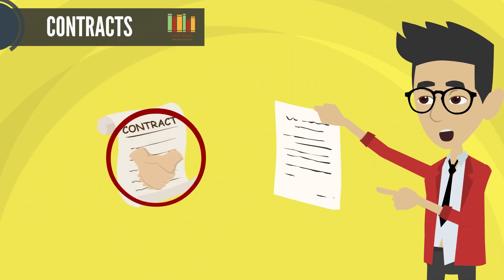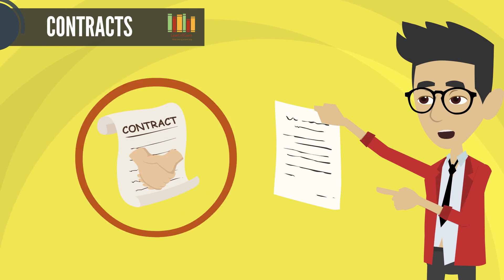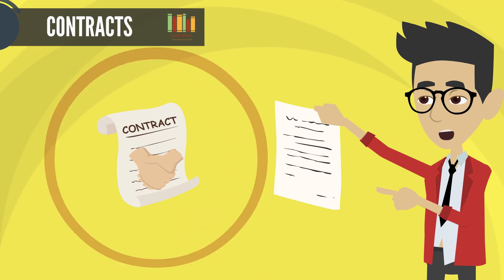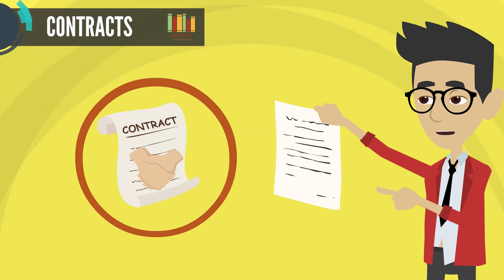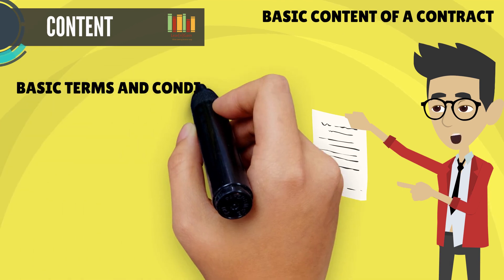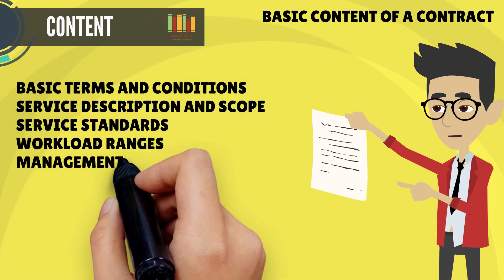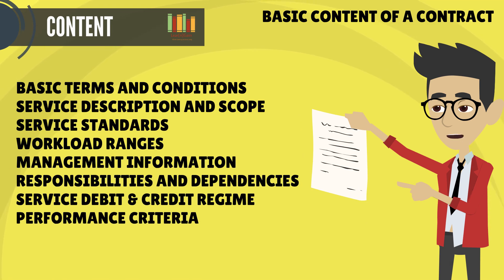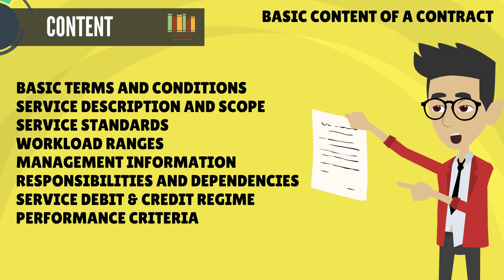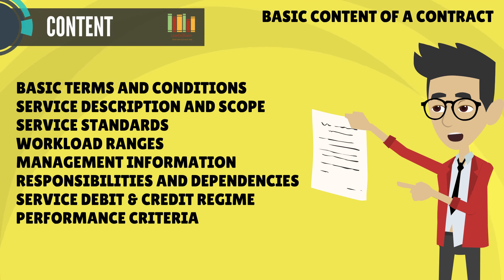Contract is one of the key pieces in managing suppliers. The nature and extent of agreement with a service provider depends on the relationship type and assessment of the risks involved. The basic content of a contract includes: basic terms and conditions, service description and scope, service standards, workload ranges, management information, responsibilities and dependencies, service debit and credit regime, and performance criteria.